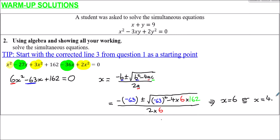We also need to work out y. Since x + y = 9: if x = 6, then y = 3, because 6 + 3 = 9. Or if x = 4.5, then y = 4.5 as well, because 4.5 + 4.5 = 9. So the full solutions are either x = 6, y = 3, or x = 4.5 and y = 4.5.